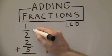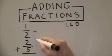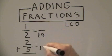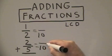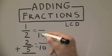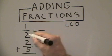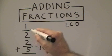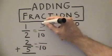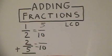Once we have our LCD, we can go ahead and make it the denominator for both fractions. Next, we take the ten divided by the two to get five. Take that five, multiply it by one to get five, and that will become our numerator for the top fraction.